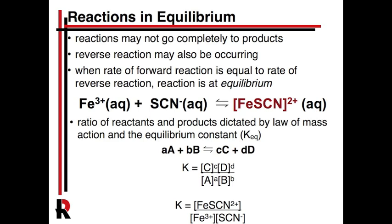We'll talk about complex ions later. All you have to know is that it's still ionic, it's not a stable compound, but it has this product. We draw it like this and it's red. The reverse reaction from the iron-thiocyanate complex back to iron and thiocyanate also happens. Eventually that reaches equilibrium.